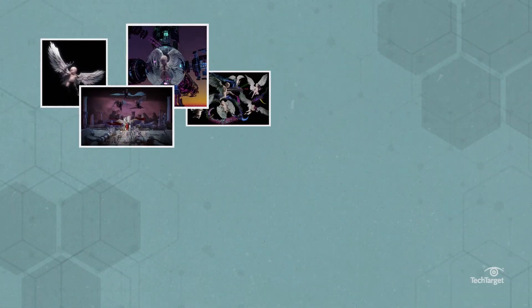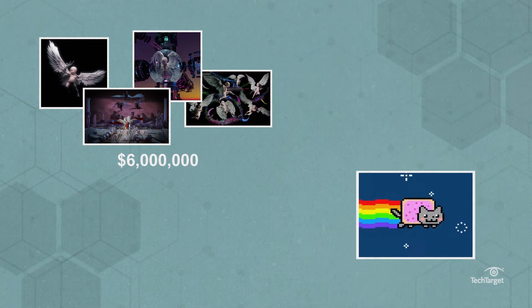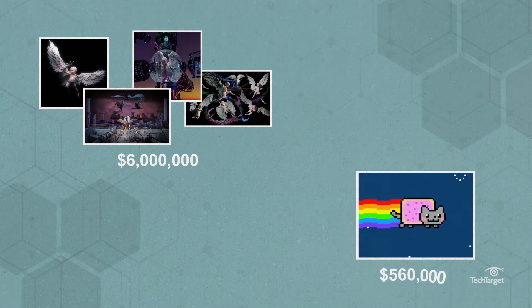In February, the musician Grimes sold $6 million worth of tokens of digital art. And the Neon Cat meme animation sold for over $560,000.